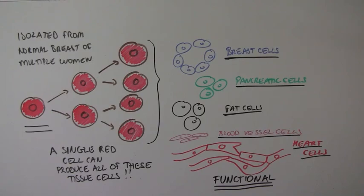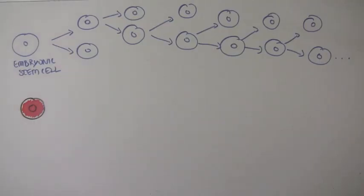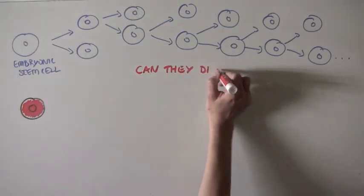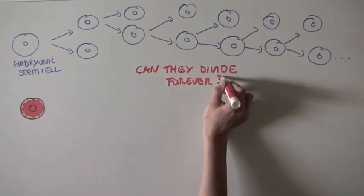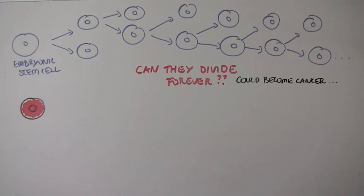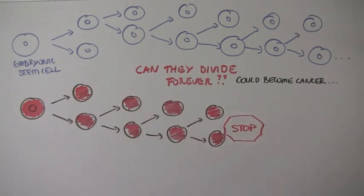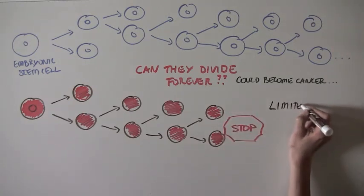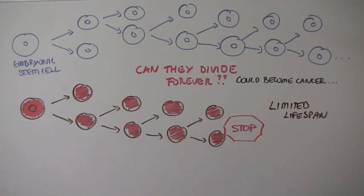So next, the scientists were curious to see if these red cells, like embryonic stem cells, could divide forever, which could suggest that they may be on their way to becoming cancer cells, and could make it more difficult to use these cells for therapy. But surprisingly, the scientists found that these red cells could not divide forever. They had a very limited lifespan, unlike embryonic stem cells and many cancer cells as well.